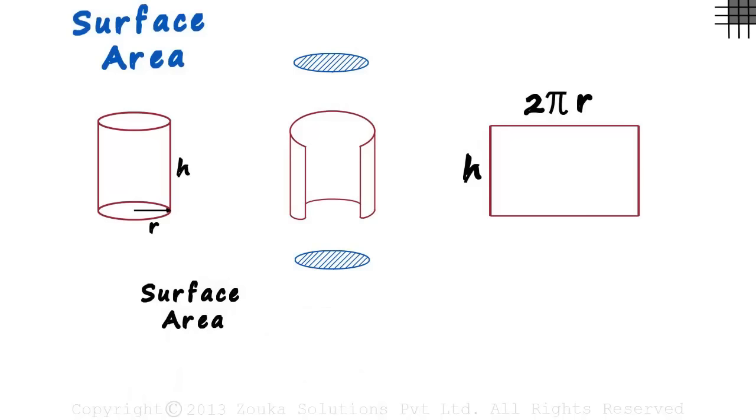The surface area will be the sum of all these three surfaces: two circles and the curved surface which is the rectangle. The area of the circular base is πr². Since there are two equal circles, we write πr² plus πr². This covers the surface area of the top and the bottom surfaces.